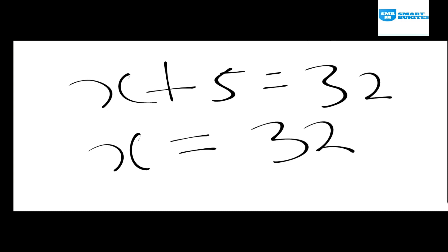Then we say x plus 5 is equal to 32. So you know we are to collect like terms and we say x is equal to, so if 5 crosses the equality side it becomes negative, then we say 32 minus 5. x is equal to 32 minus 5, x is equal to 27.